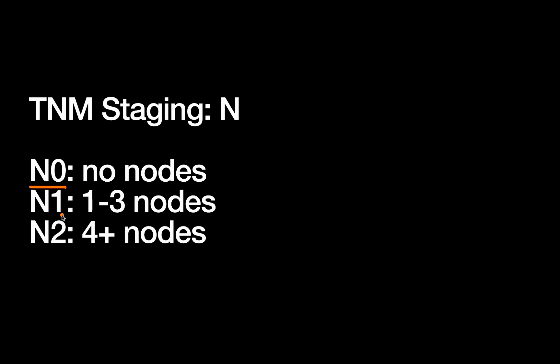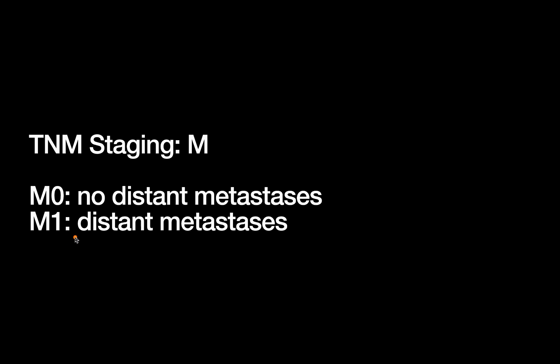N staging is simpler. N0 means no nodes involved. N1 is one to three positive nodes, N2 is four or more. The cutoff surgeons care about is N0 versus N1, again relating to adjuvant therapy. For M staging, M0 is no distant metastases and M1 is the presence of distant metastases. In colon cancer, this is a less absolute distinction because we sometimes still operate in M1 disease.